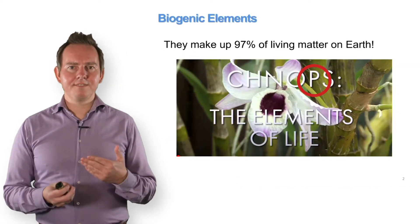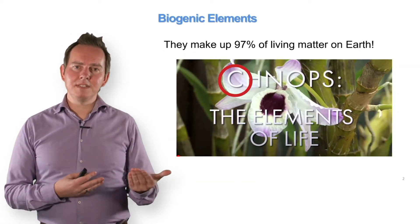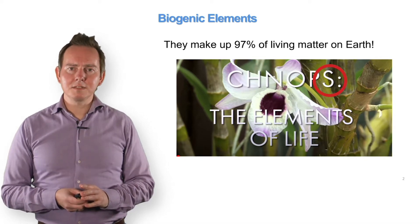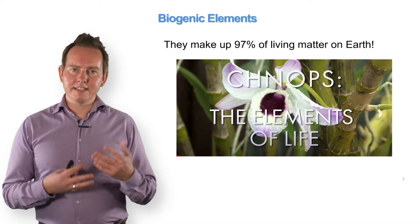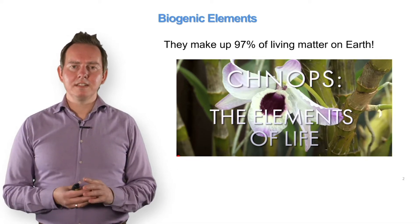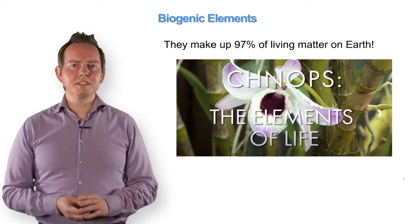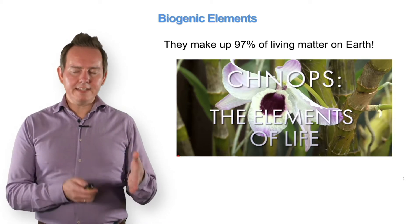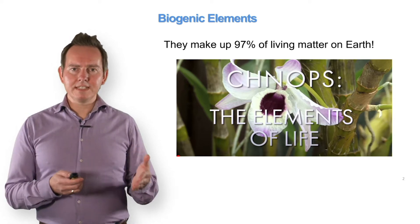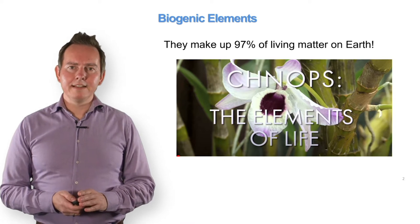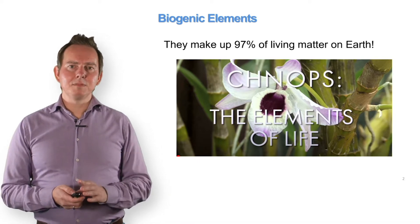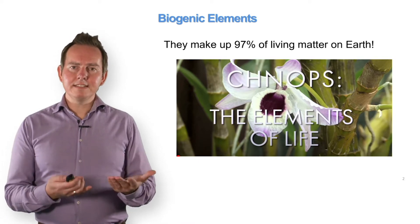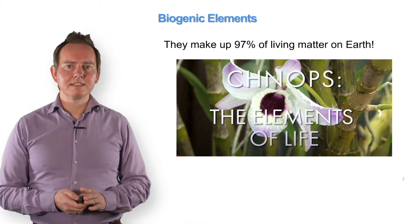Phosphorus, next to carbon, hydrogen, nitrogen, oxygen, and sulfur, are the key biogenic elements that are essential for the origin of life. They are key elements and we cannot live without them. 97% of living matter is created — is built from these six elements.